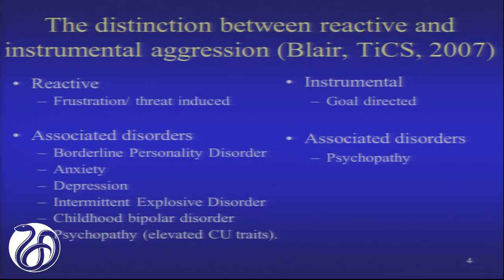We see the difference in the associated disorders. A large variety of mental health conditions increase the risk for reactive aggression: borderline personality disorder, anxiety, depression, intermittent explosive disorder, childhood bipolar disorder, as well as psychopathy. Very different from that is the fact that really only one mental health condition is primarily linked with increased risk for instrumental aggression — and that's psychopathy, or callous-unemotional traits.